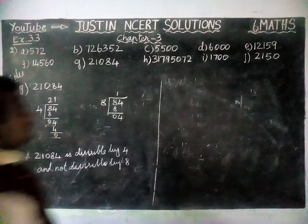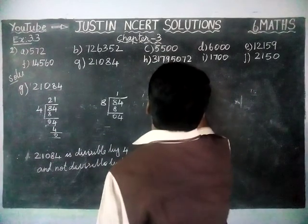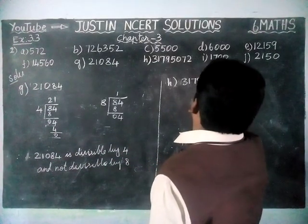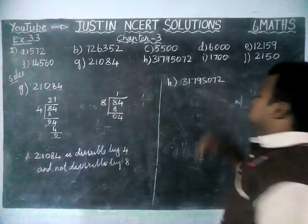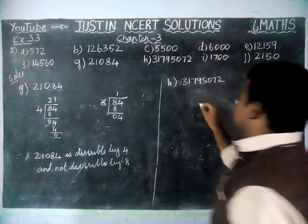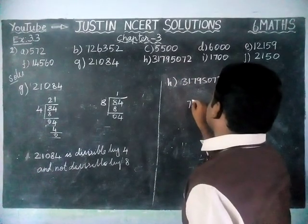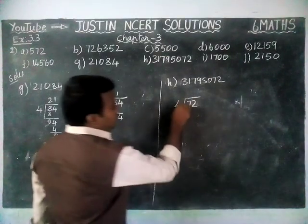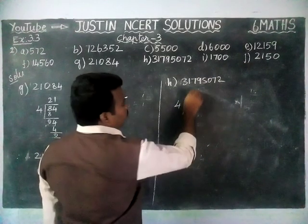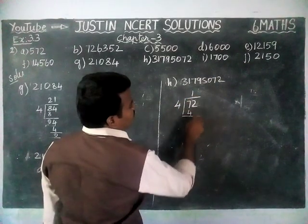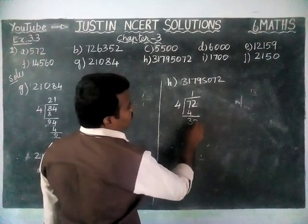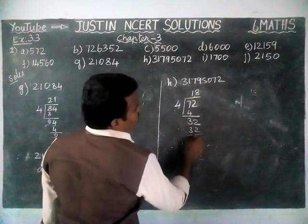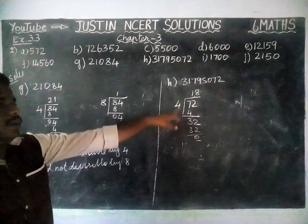Next, option H. We check the last 2 digits for divisibility by 4. The last 2 digits are 72. Dividing 72 by 4: in 7, 1 four is 4, remaining 3, giving 32. 8 fours are 32, remaining 0. So this number is divisible by 4.